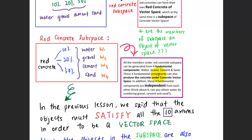These four fundamental components can also produce the concrete under the larger concrete vector space. In addition, these four fundamental components are independent from each other. Can you obtain water by combining gravel, cement, and sand, or vice versa — any one component from the combinations of the other three? This is what is meant by independence from each other.